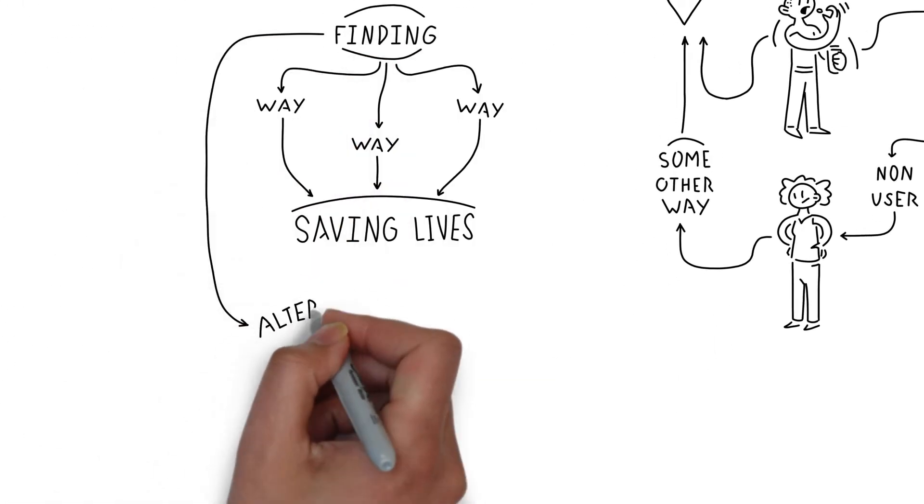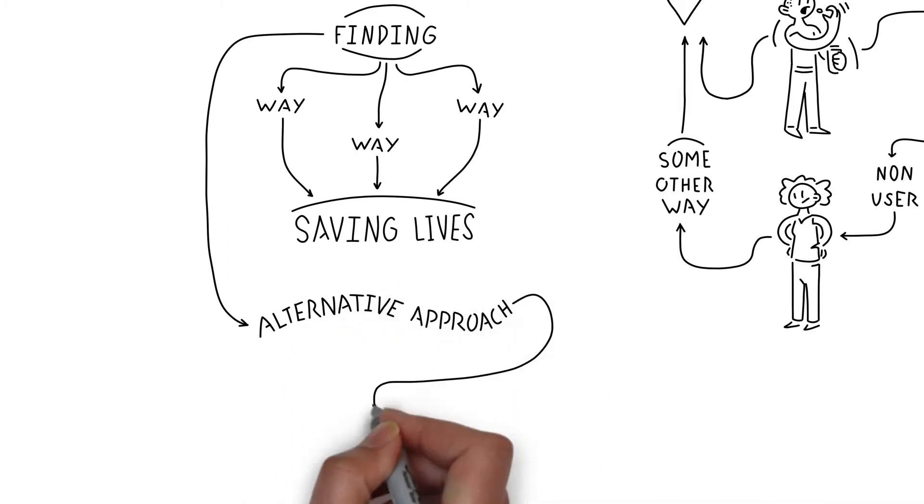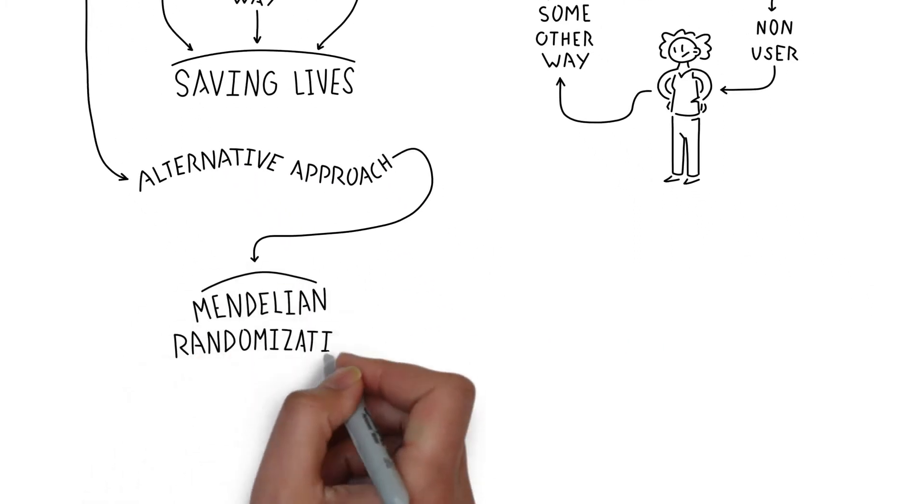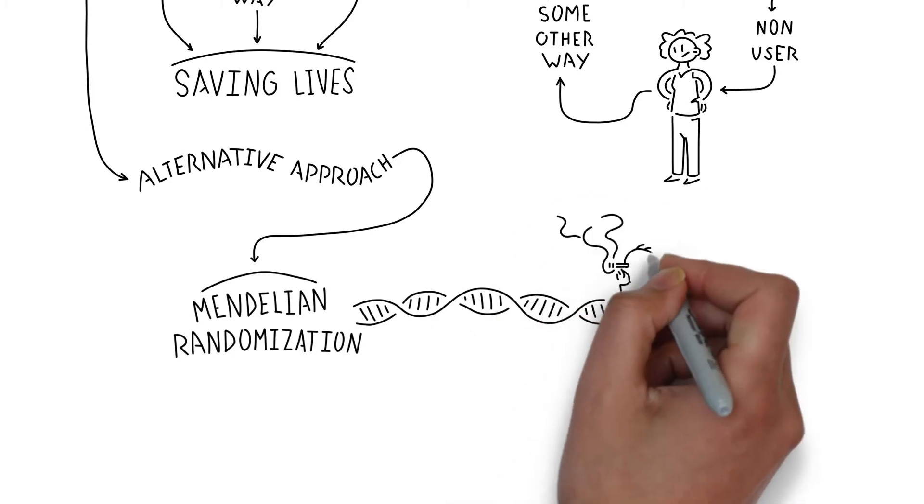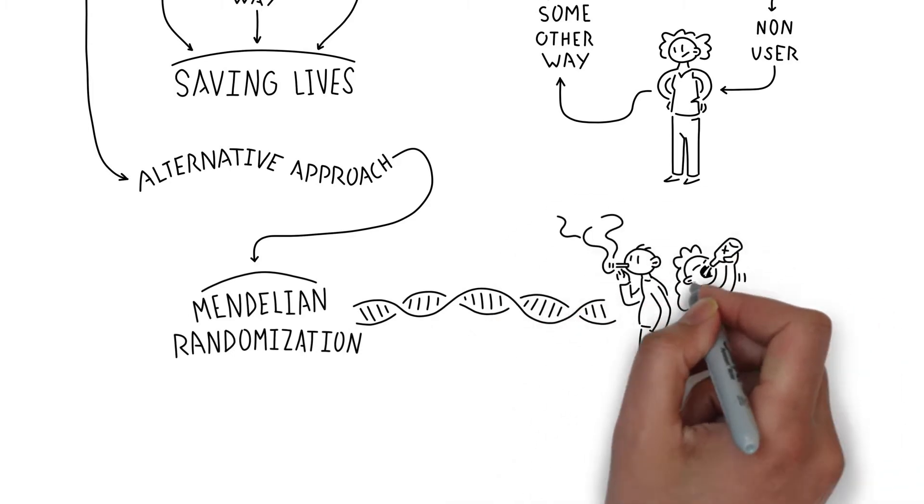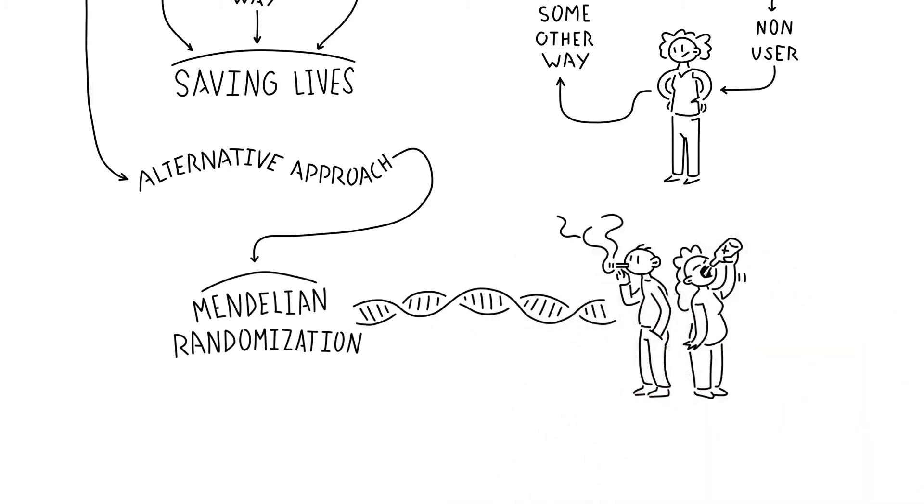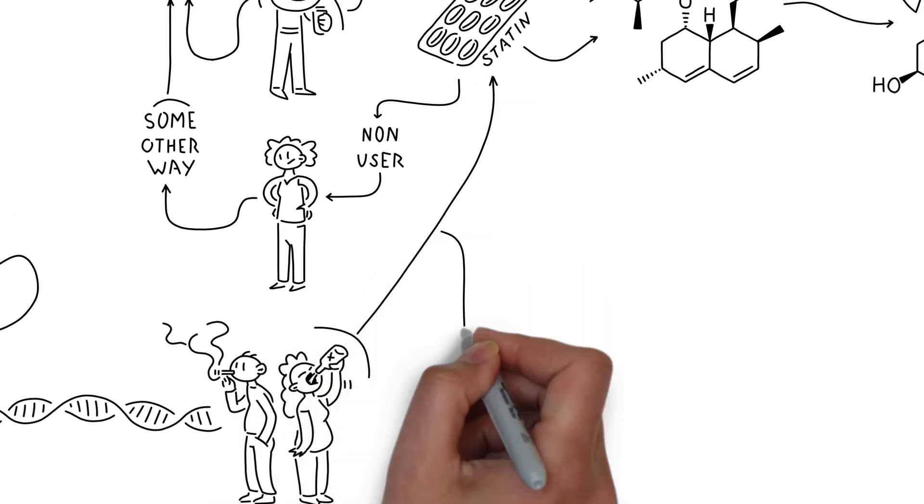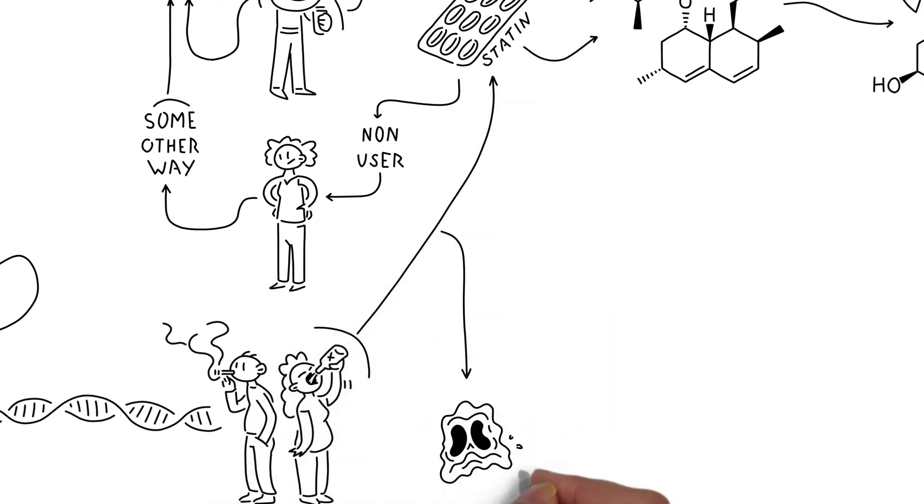An alternative approach is called Mendelian randomisation. This uses genetic variation as a natural experiment to investigate causal relationships between lifestyle factors, behaviours and the use of drugs like statins with disease outcomes.